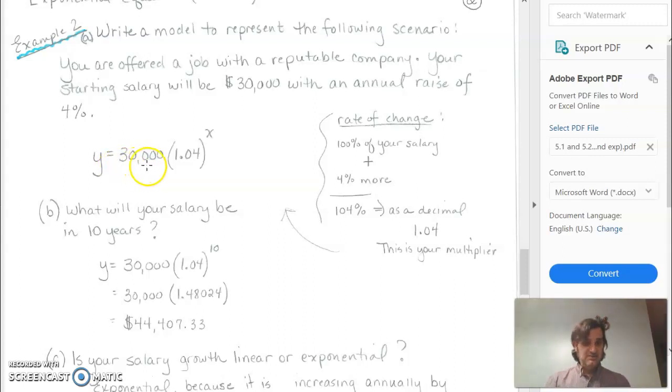So we started with $30,000, and then this 1.04 is 100%, which is what we started with, plus 4 more percent. So 104% of our previous salary will be the next year. So we write that as a decimal as 1.04. So we can write the equation if we wanted to figure out what our salary would be in 10 years. That's basically putting on 4%, taking the new total, putting on another 4% of the new total, and so on. So it grows rather quickly.